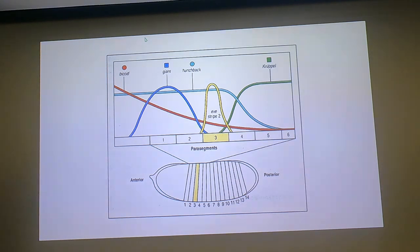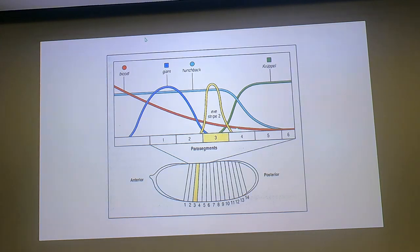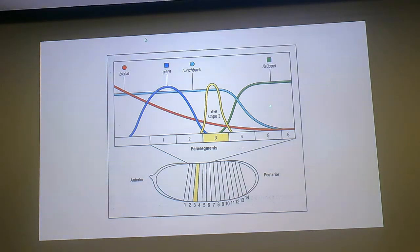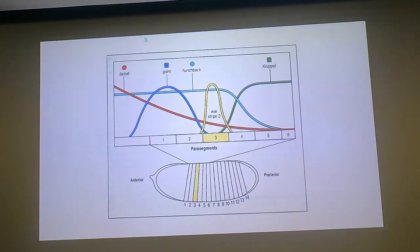We can dissect those regulatory regions and look at the expression patterns and try to correlate those. Here's even-skipped again—this is the length of the animal, and we're looking at the different segments. In segment three, even-skipped is supposed to be turned on, so it's got a stripe right there. That's the concentration of Eve in this region. We also saw that there's bicoid in a gradual gradient across the length of the animal.